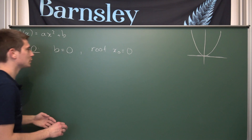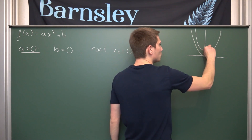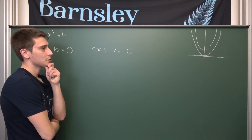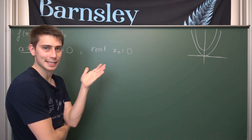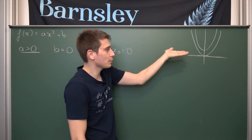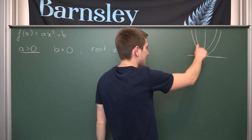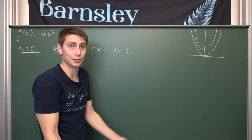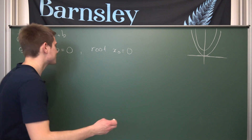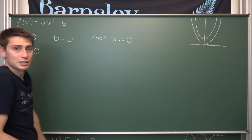What about b greater than zero? If we have b > 0, we are going to shift our parabola in the positive y direction. How many zeros do we have now? The visual representation comes in quite handy, because you can see at a glance that for a > 0 and b > 0, no roots exist. We do not cut through the x-axis at all — there are no real zeros which satisfy ax² + b = 0. So for a > 0 and b > 0, we are not going to have any real roots.